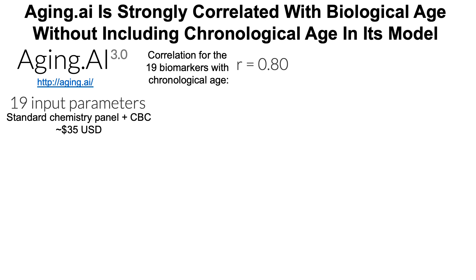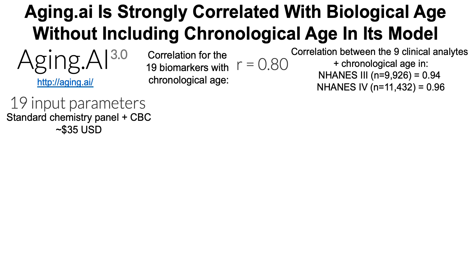How do the 19 blood biomarkers correlate with chronological age — without chronological age being in the calculation? It's pretty strong with a correlation coefficient of 0.8. For comparison, that's not as strong as Levine's phenotypic age calculator, which for the combination of nine clinical biomarkers and chronological age was almost perfectly linearly correlated in two studies: NHANES-3 with 0.94 and NHANES-4 with 0.96. The best epigenetic clock, Steve Horvath's from 2013, has a correlation of 0.97. Aging.ai, although not as strong, offers a different perspective on biological age while still being strongly correlated with chronological age.